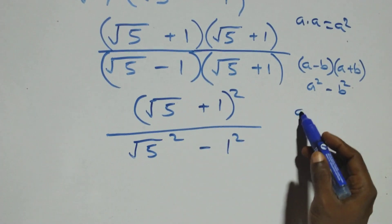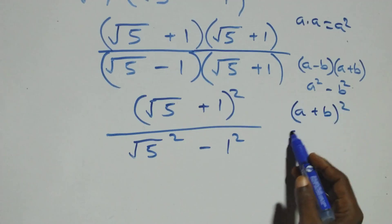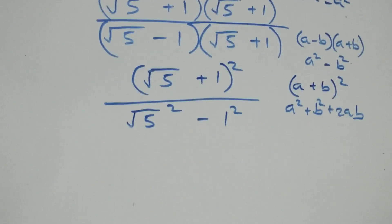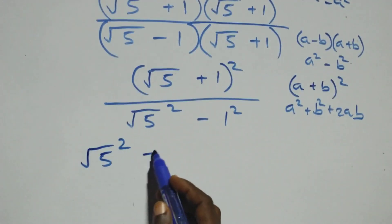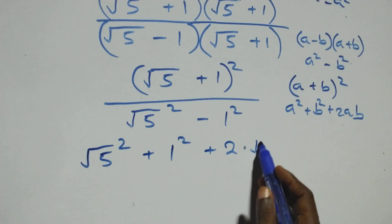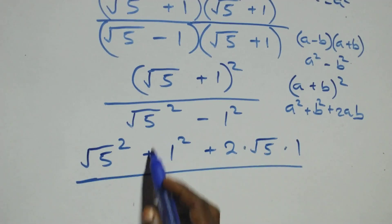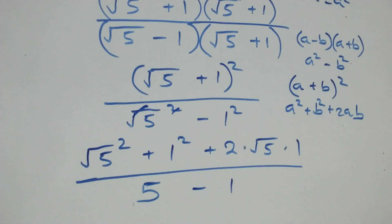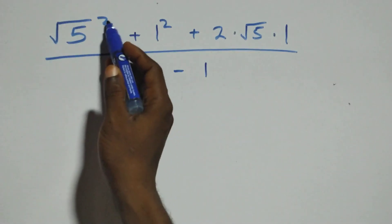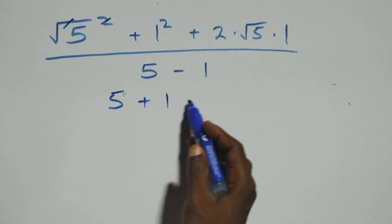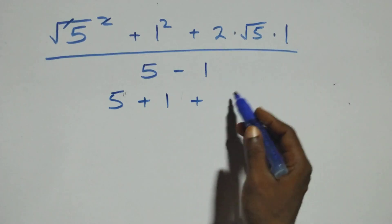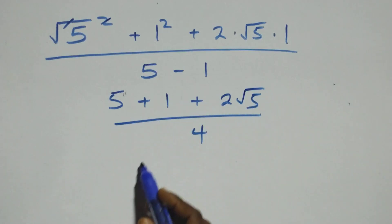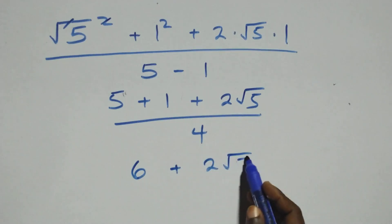Here we expand: we have root 5 squared plus 1 squared plus 2 times root 5. Here we have root 5 squared which is 5, plus 1 square which is 1, plus 2 times root 5. The denominator: root 5 squared minus 1 squared, which gives 5 minus 1 equals 4. So we have 5 plus 1 plus 2 root 5, all over 4, which is 6 plus 2 root 5 over 4.